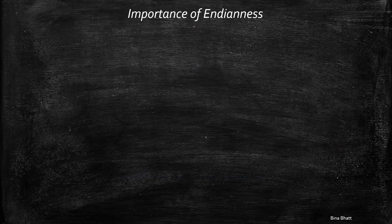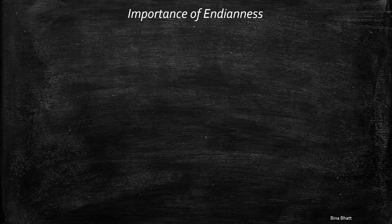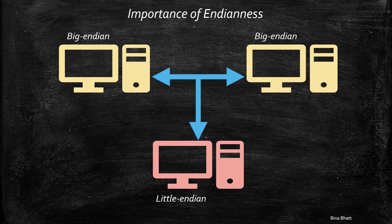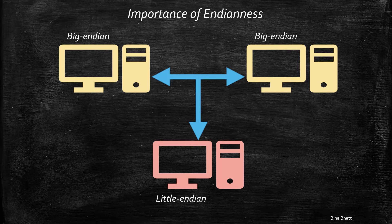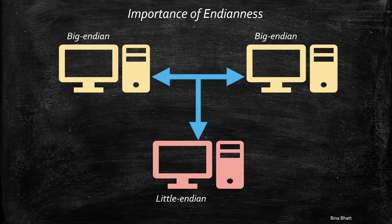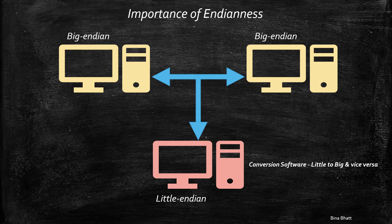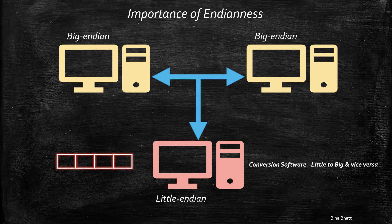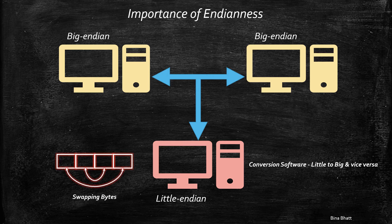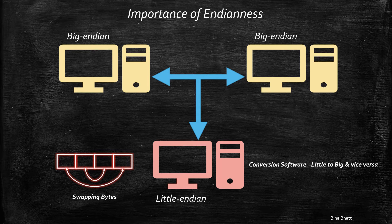However, you'll need to be mindful of endianness when you want to transfer data between two or more systems because they may or may not be using the same endianness. Thus, in order to maintain consistency, there'll be a need to add a layer of software which converts from one type of endianness to another. Basically, for communication purposes, you'll need to perform swapping of bytes.